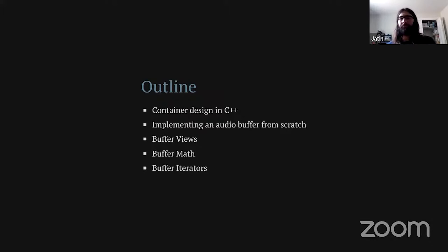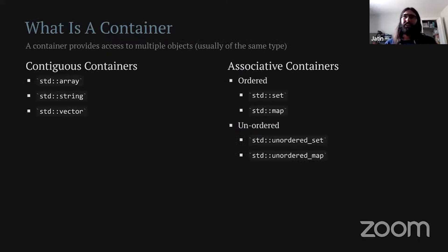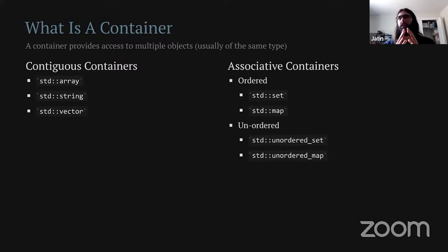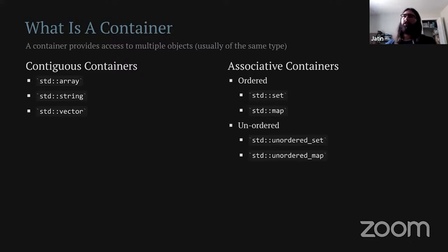Starting off with C++ containers: I'm going to define a container as something that gives you access to multiple other things — usually all the same type. If you're talking to C++ people about containers, they'll usually separate them between contiguous containers and associative containers. A contiguous container stores all of the items in a contiguous block of memory, so your first item is in some memory and the next item is right next to it. An associative container might be something like a set or map where things live all around memory but can point to each other.